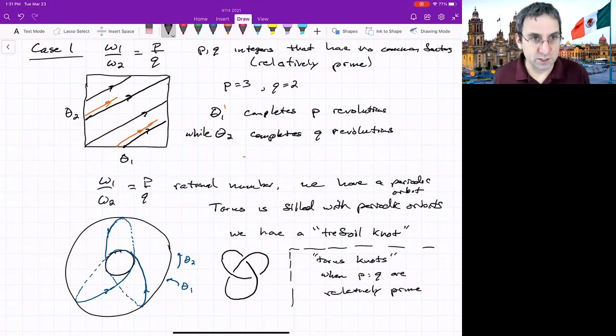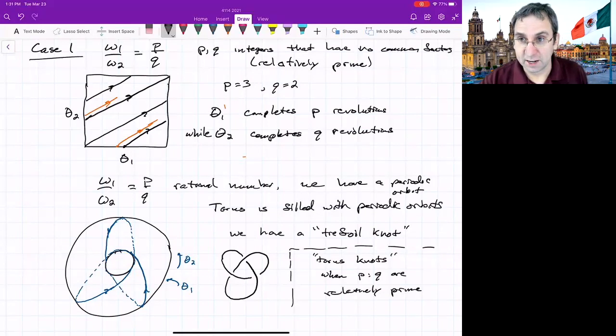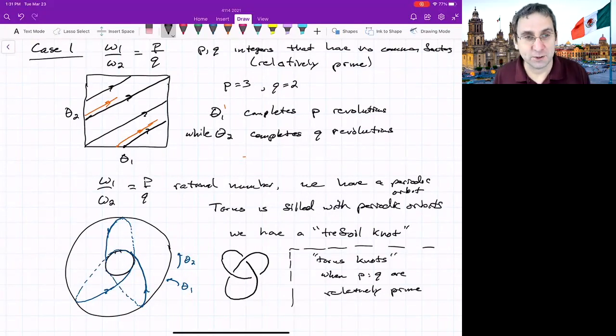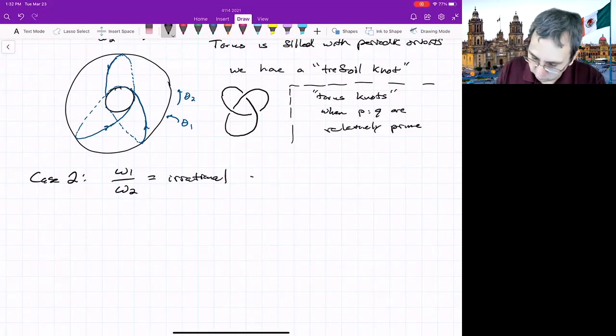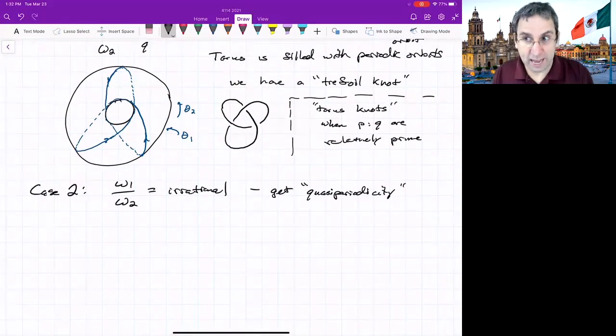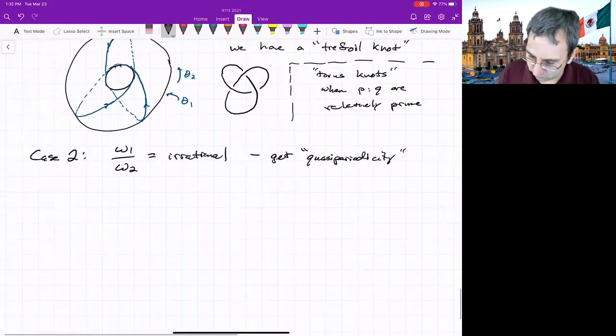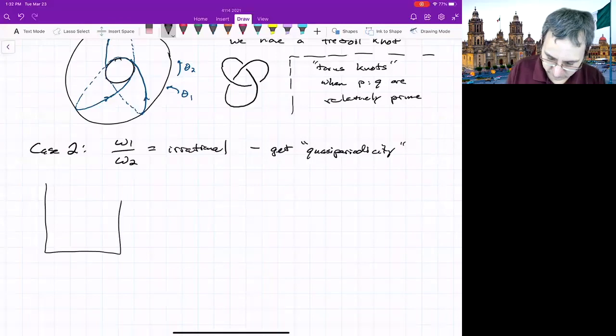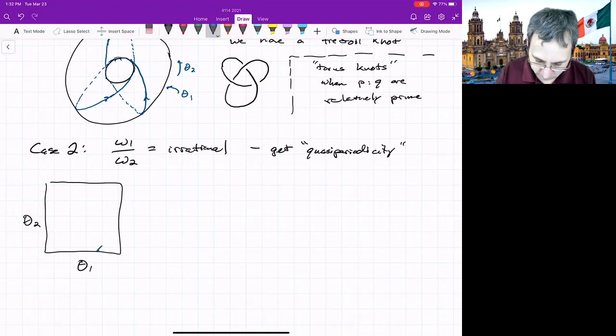So you get torus knots when p and q are relatively prime. The main point here is when the frequencies, omega one and omega two are the natural frequencies, and their ratio is a rational number, then no matter where you start, it will be a periodic orbit. Now the other case would be when omega one over omega two is irrational. So you can't write it as p over q for any integers. If these are irrational, then we get a behavior that's called quasi periodicity. And when the ratio of the frequencies was rational, we get actual periodicity. This thing repeats itself. But quasi periodicity, hopefully you can convince yourself, no matter where you start in omega one or omega two space in this kind of square representation, this will never come back on itself. It'll just keep on going but never repeat.